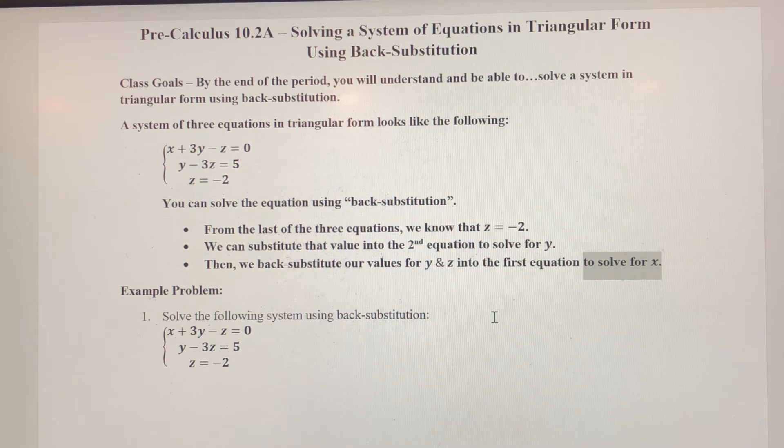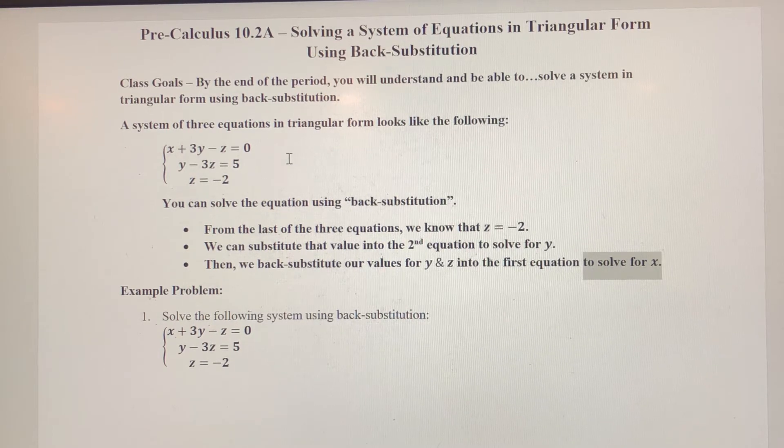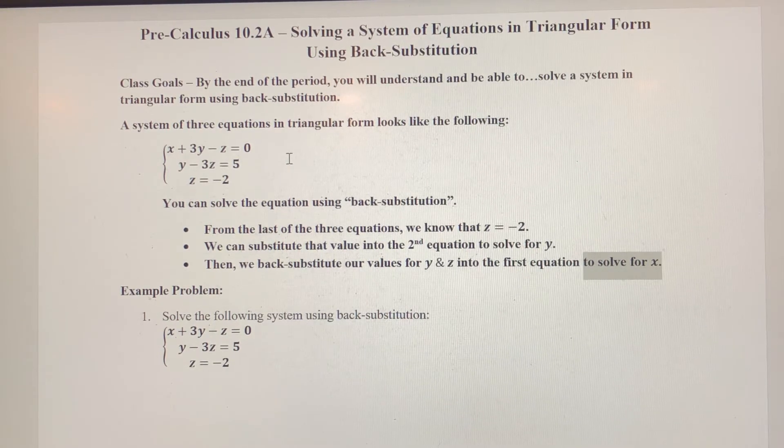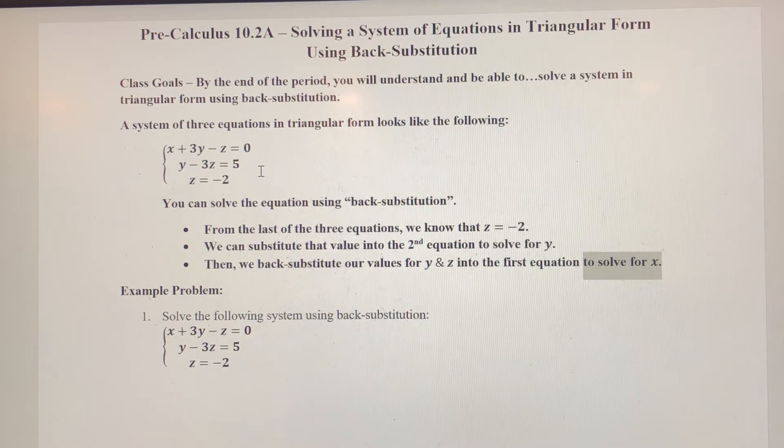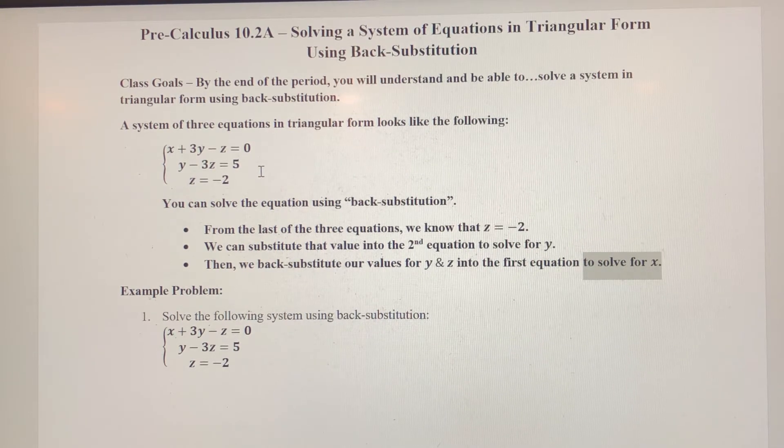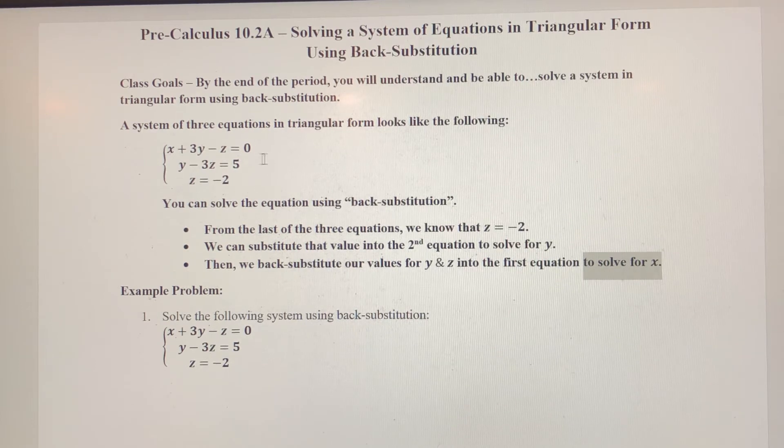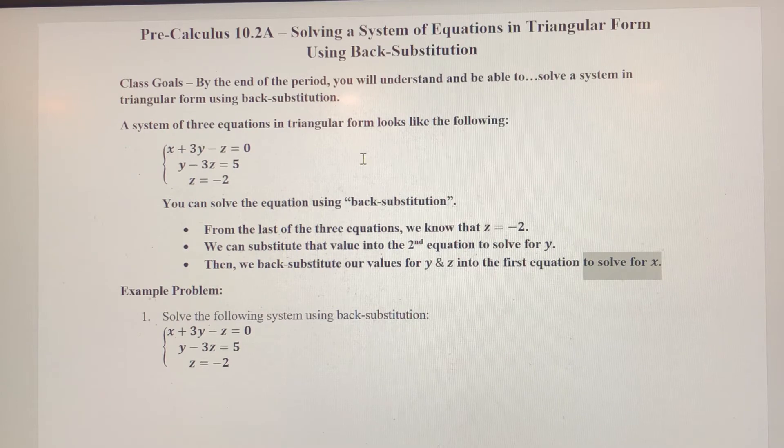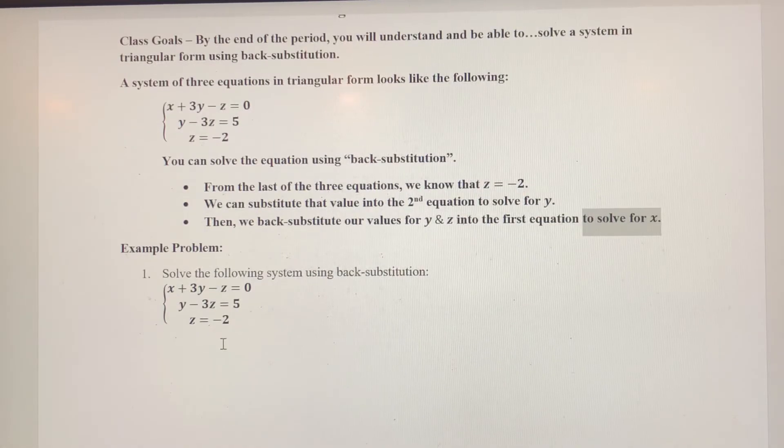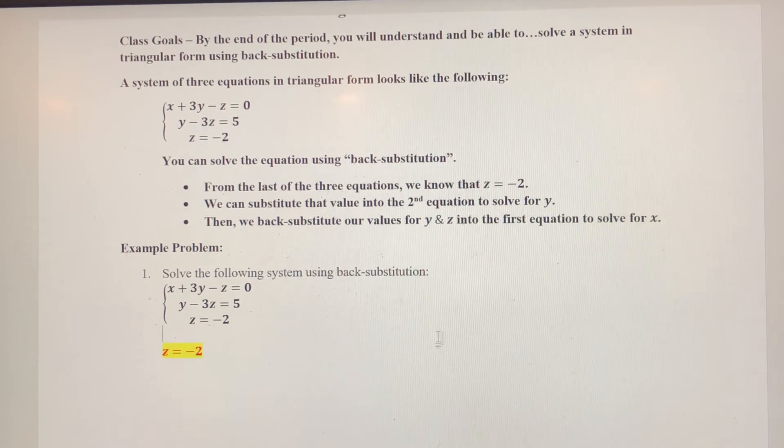Once we get into the next section, we're going to have a system of three equations and three variables, and we're going to have to create this triangular form using some of the methods we've learned earlier. But for now, this is the most basic system of three equations in three variables. Again, you'll notice here we know from the third equation, Z equals negative two, so that's a third of my solution set here.